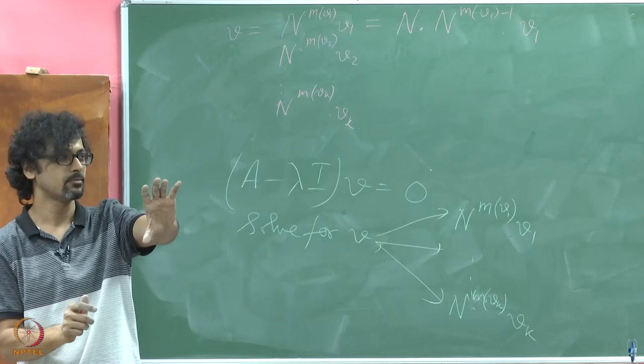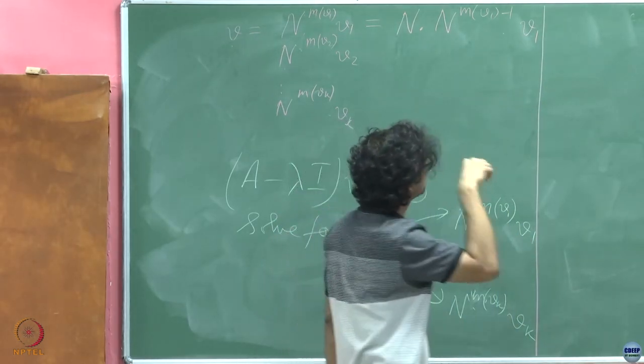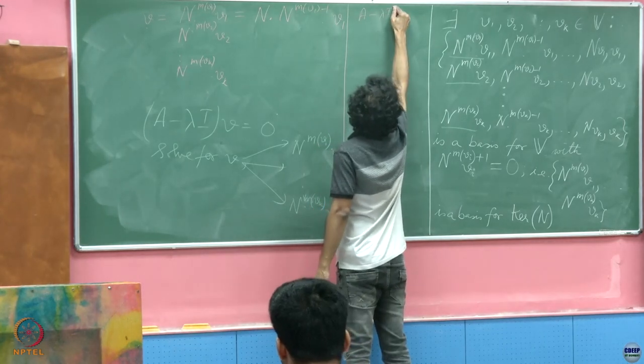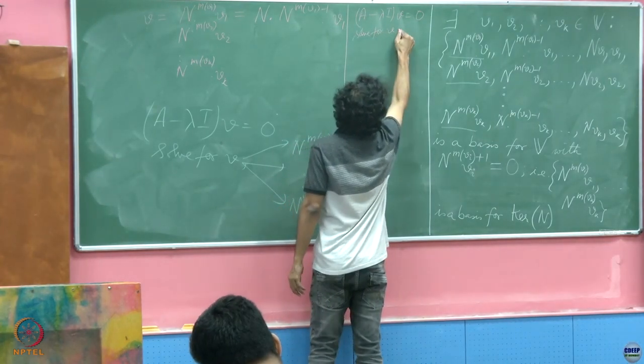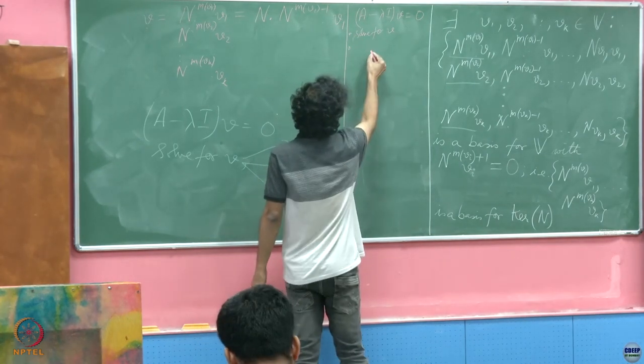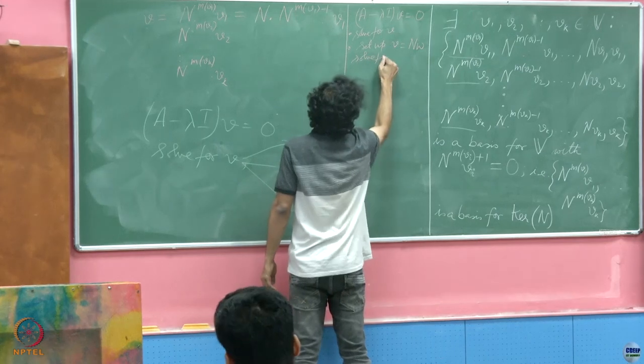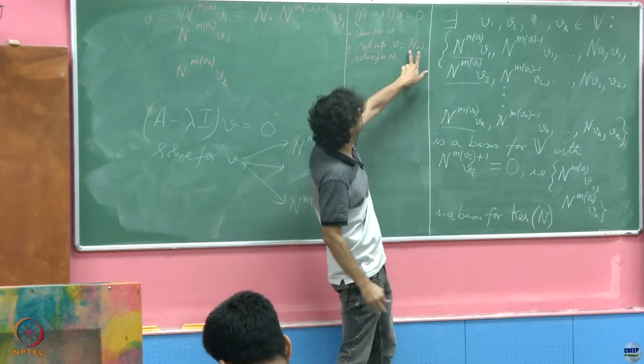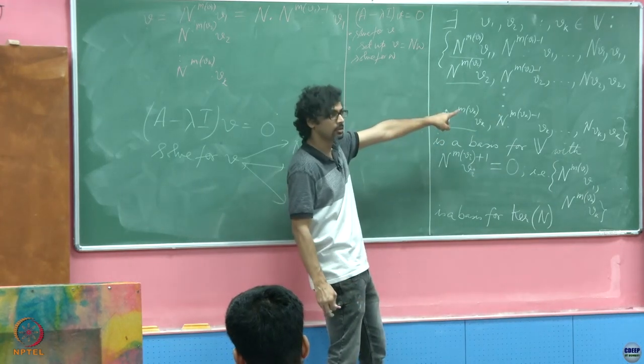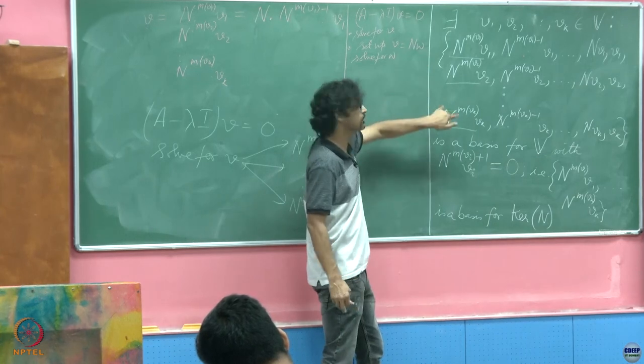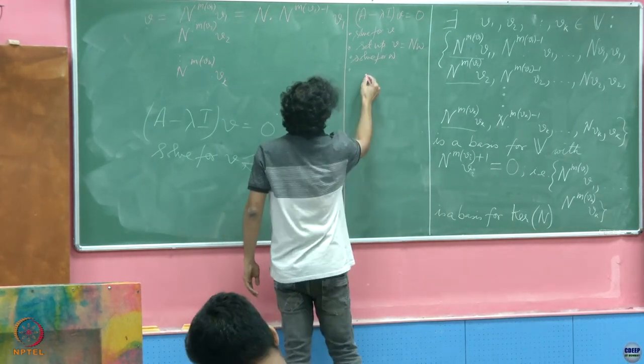So, I mean, maybe I will run out of symbols, but nonetheless. So, first you set up A minus lambda I, V is equal to 0. You got your V. Solve for V, okay. This is your first step. Second step, set up V is equal to NW. Solve for W. The Jordan form merely guarantees that such a solution, that you will not run into trouble in this algorithm at this step. That is the beauty of this. The Jordan form assures you, as we will see in the proof next day, that this equation will have a solution irrespective of the fact that N is not invertible. Then, you carry on like this, solve for W.